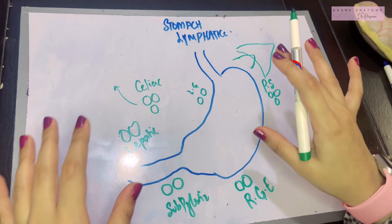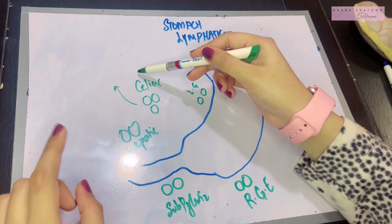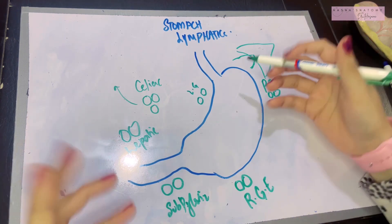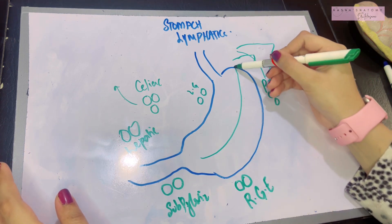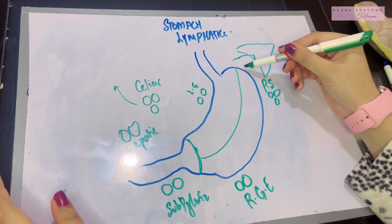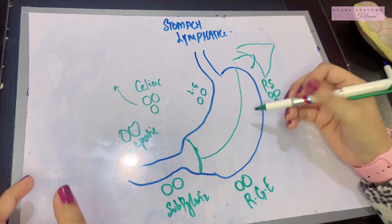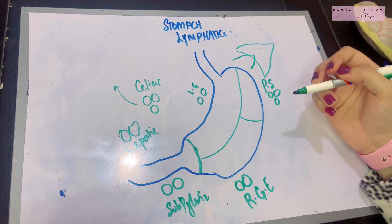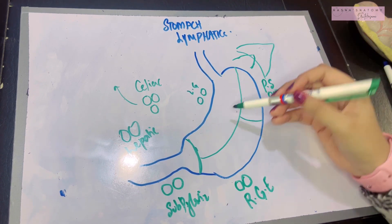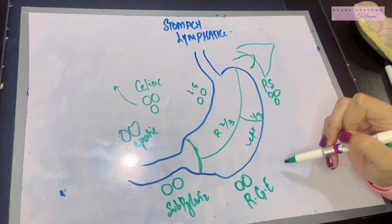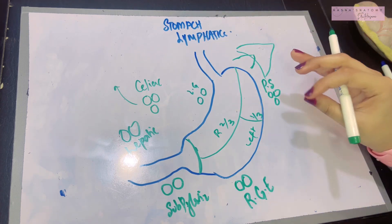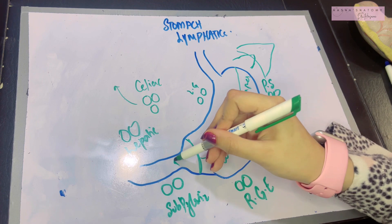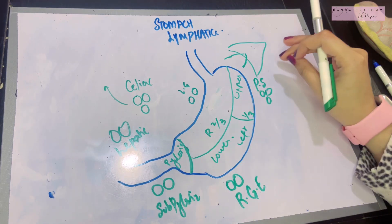As a general rule, all the lymph has to drain into the celiac nodes. Let's divide the stomach into various areas. You'll make half a smile here, then make half a tongue coming out from that smile. What happens here is you've now divided the stomach into a right two-thirds part and a left one-third part. The left one-third is further divided into an upper and a lower part, and finally there is the pyloric part.